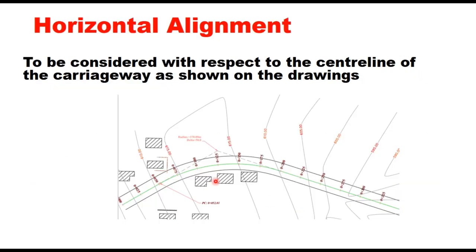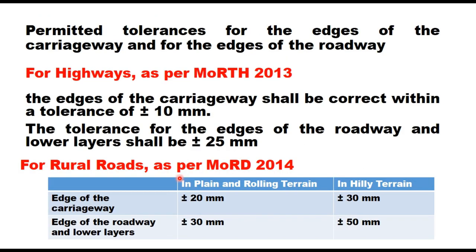The first aspect is horizontal alignment, and this is to be considered with respect to the center line of the carriageway as shown on the drawings. The tolerance in horizontal alignment basically means maintaining the carriageway width according to the drawing, and it should be ensured in construction of each layer. The tolerance here means up to what standard this width has been kept in the final construction. The permitted tolerance for edges of the carriageway and for the edges of the roadway as given in the two books is as follows.